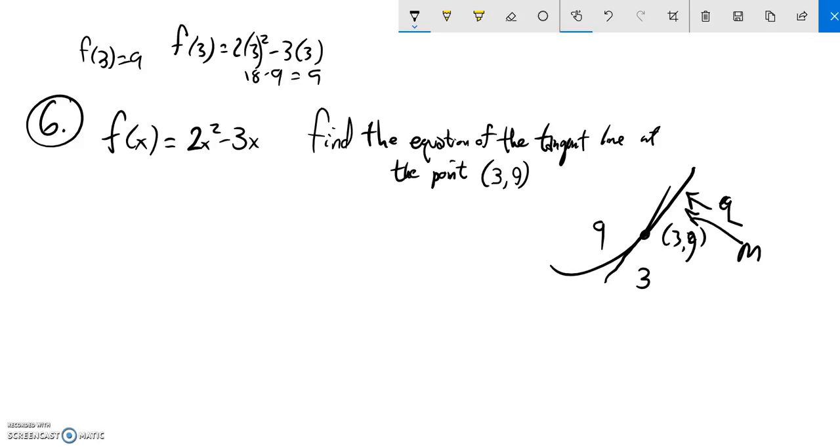The other thing I need is the slope of this line. So if I can find the slope of this at 3, then I can use that to plug it into my point-slope equation for a line.